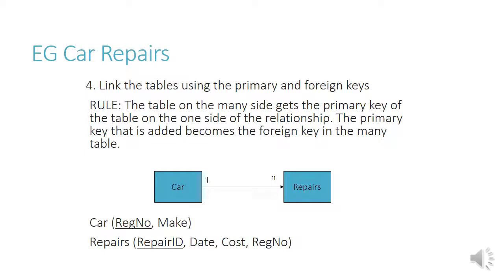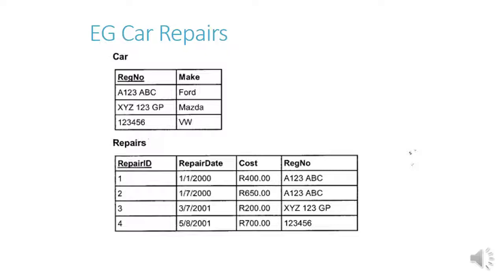Step four, we link the tables using primary and foreign keys. The table on the many side — which is the repair side — gets the primary key of the table on the one side of the relationship. The primary key that is added becomes the foreign key in the many table. The primary key on the one side is registration number, so we add registration number to the repairs table, where it is now a foreign key. Our normalization is complete. That's how the two tables look with data in them.